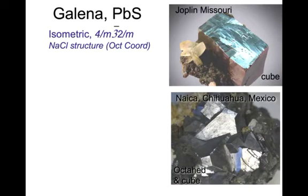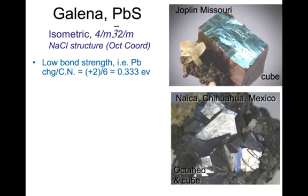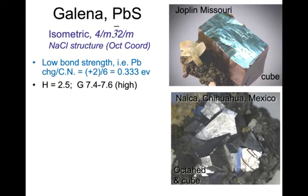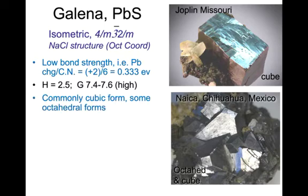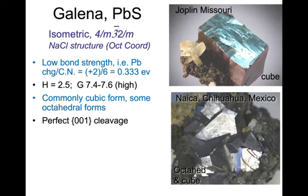Galena is this example. It's isometric, with an NaCl structure where sodium and chlorine are in octahedral or six-fold coordination. Galena has very low bond strength — we can calculate it using Pauling's rules by dividing charge by coordination number. Lead has a plus-2 charge and coordination number of six, so the bond strength is 0.33, which is very low. Consequently it has low hardness but very high specific gravity because of the presence of lead. It commonly forms cubic forms, as shown in the upper right, and sometimes octahedral forms, as shown in the lower right. It has beautiful and perfect 001 cleavage perpendicular to the A1, A2, A3 axes.